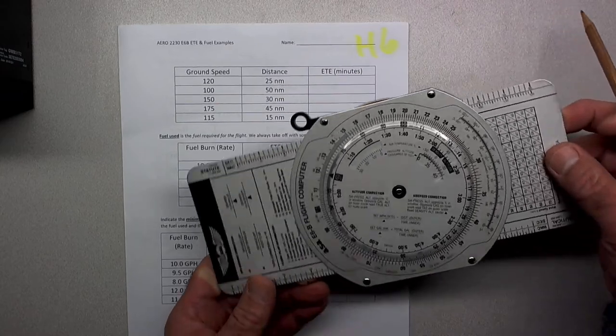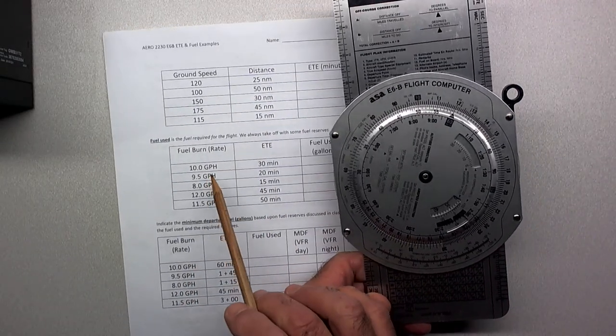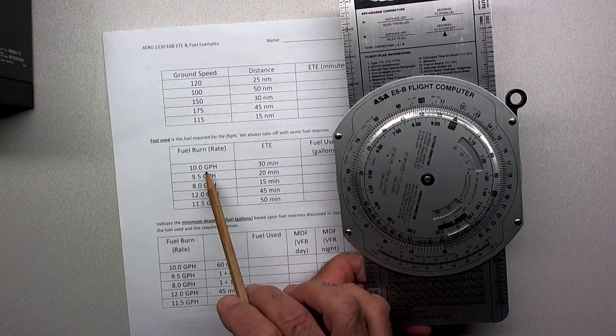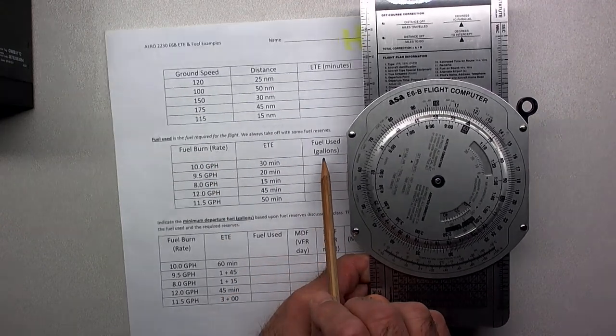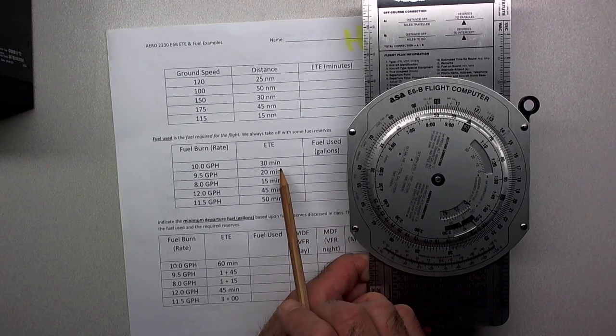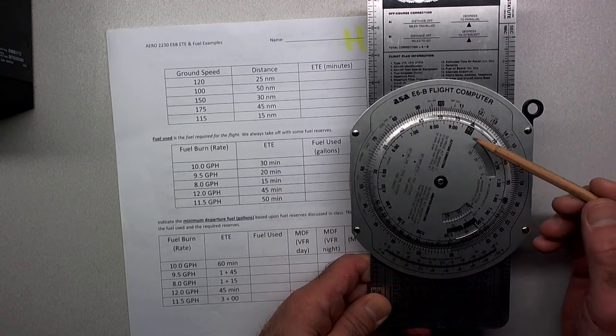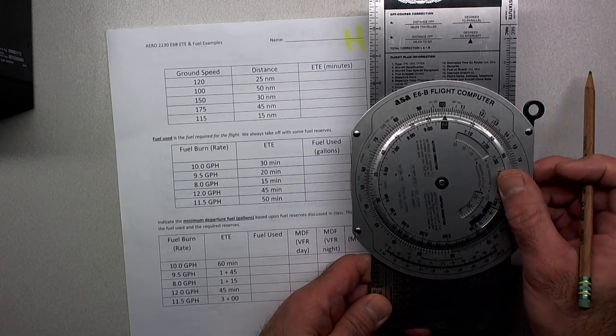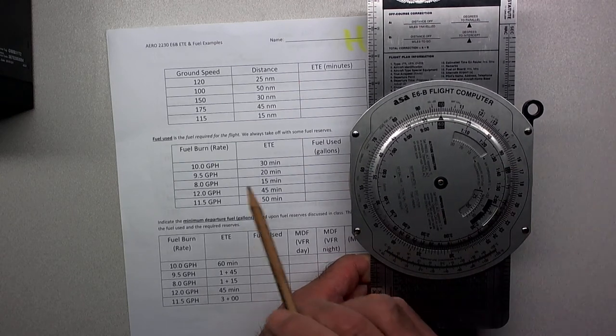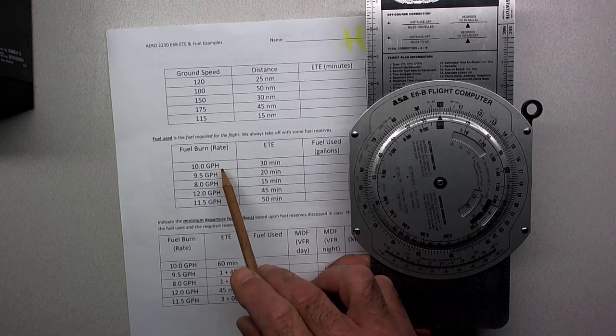Now let's look at the fuel burn. This problem says that we will burn 10 gallons per hour, and it's asking us to figure out how many gallons we're going to use in 30 minutes. We take the time on the inside, 60 minutes, and line it up with 10 gallons, because that's our estimated fuel burn—10 gallons in one hour.